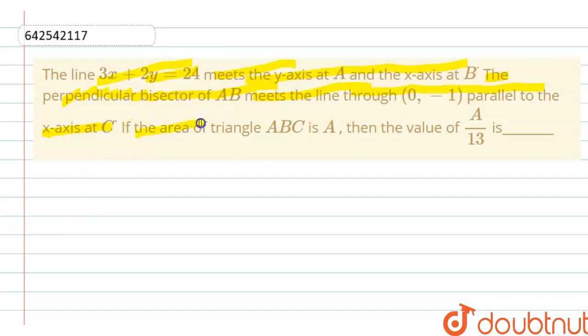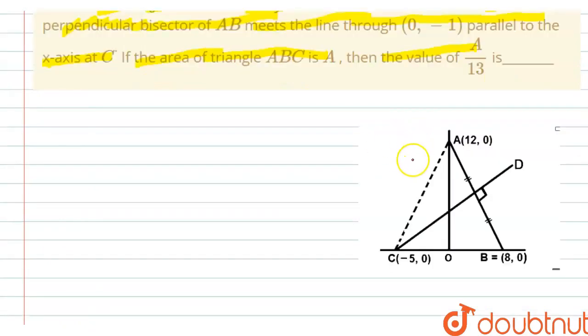If the area of the triangle is A, we need to find the value of A upon 13. So firstly, let me draw the diagram. This is the diagram, I have mentioned all the points: A, B, C and D.